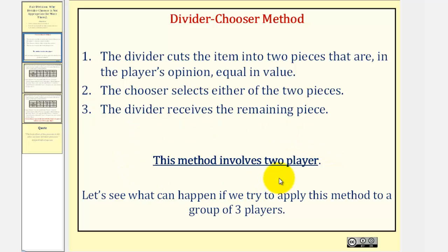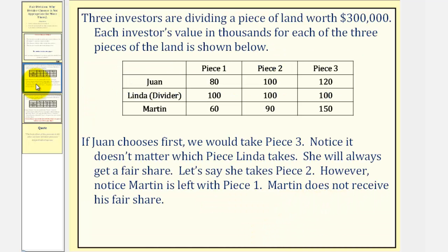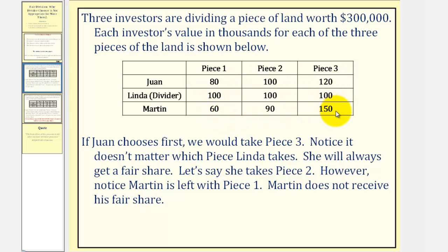This method is meant for only two players, but let's see what can happen if we try to apply it to a group of three players. Three investors are dividing a piece of land worth $300,000. Each investor's value in thousands for each of the three pieces of land is shown below. For example, one investor values piece one at $80,000, piece two at $100,000, and piece three at $120,000. Notice each row would have a sum of $300,000, the total value of all the land.